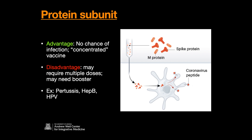The third type is the protein subunit vaccine. Here we grow up the virus, isolate and purify the antigenic or immunogenic proteins on the virus surface, and inject these either alone or with an adjuvant. In the case of COVID, you might take a whole slew of spike protein, purify it, and inject that. The advantage is no chance of infection from just the proteins, and we can concentrate a large amount of spike protein in the injection. The disadvantage is the protein has a set half-life, so it may require multiple doses or a booster. Examples include pertussis, hep B, and HPV vaccines.